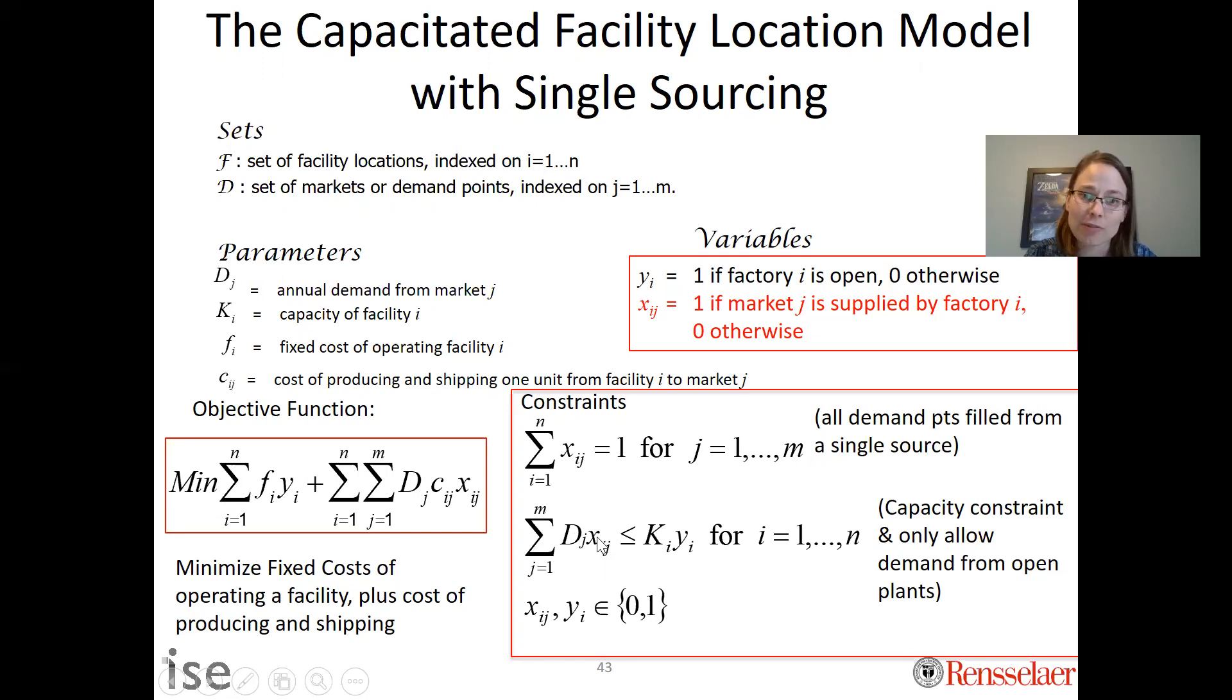If I'm summing up over the x's, that doesn't represent the quantity coming out of a facility, so I need to incorporate the dj's into that to get the quantity. Now the right-hand side of this constraint doesn't change, and so that enforces the capacity constraint.